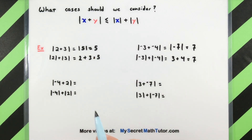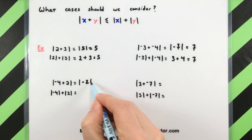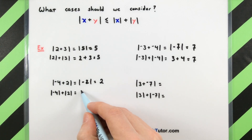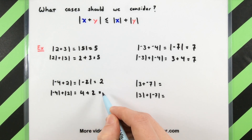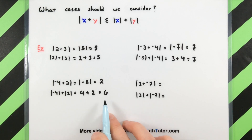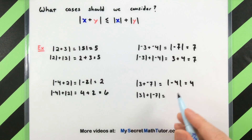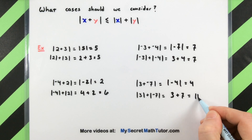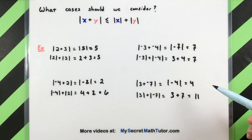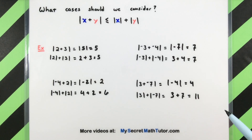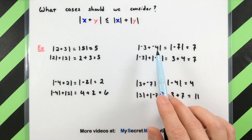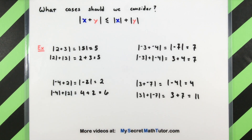Negative 4 plus 2 is negative 2; absolute value turns it positive to 2. Taking care of these individually: absolute value of negative 4 is positive 4, absolute value of 2 is 2, giving us 6. So here the right-hand side is bigger. Also, 3 plus negative 7 is negative 4; absolute value gives 4, while 3 plus 7 gives 11 on the right — another case where the right-hand side is definitely bigger. What all these examples show us is that the sign is going to be very important to keep track of when breaking into cases: which is positive, which is negative, which number is bigger.